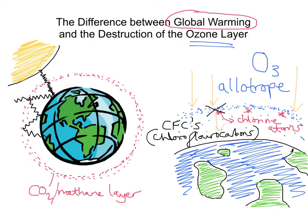So you can see this hole in the ozone letting these UV rays in can have devastating consequences. The use of CFCs is now controlled, but this is ultimately what has led to the destruction of the ozone layer — these chlorofluorocarbons released into the atmosphere, producing reactive chlorine atoms that have damaged this protective ozone layer. So there we have, in this video, the difference between global warming and the destruction of the ozone layer. Hopefully that helps.